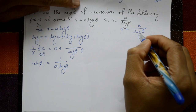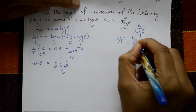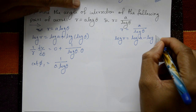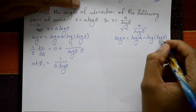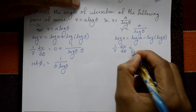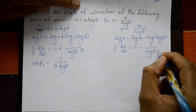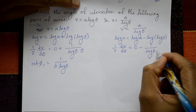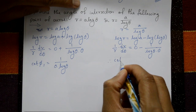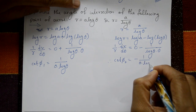For the second curve r = a/logθ, taking log: log r = log a − log(logθ). Differentiating: (1/r)(dr/dθ) = 0 − (1/logθ)·(1/θ). Therefore cotφ₂ = −1/(θ·logθ).